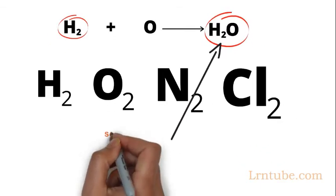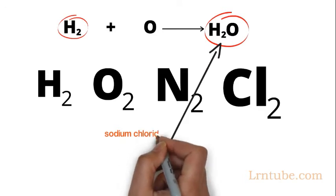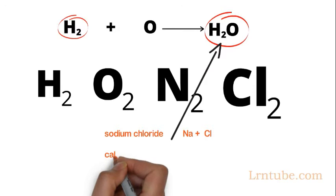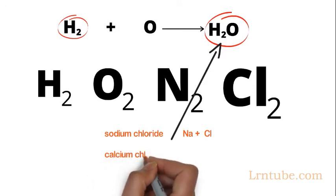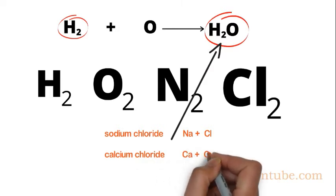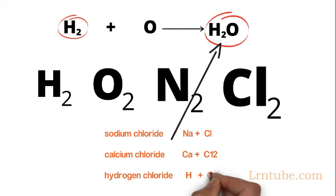Sodium chloride, which is formed by the combination of a sodium atom and a chlorine atom; calcium chloride, formed by a calcium atom and chlorine atoms; and hydrogen chloride, formed by combining hydrogen and chlorine.